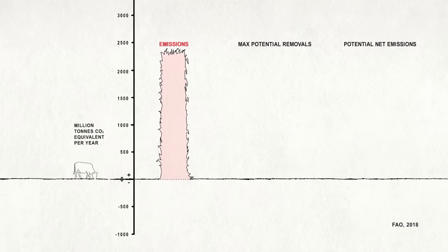Next, using optimistic assumptions, they identified how much carbon could potentially be removed from the atmosphere if the way grazing is managed today were improved worldwide so as to promote increased carbon sequestration.